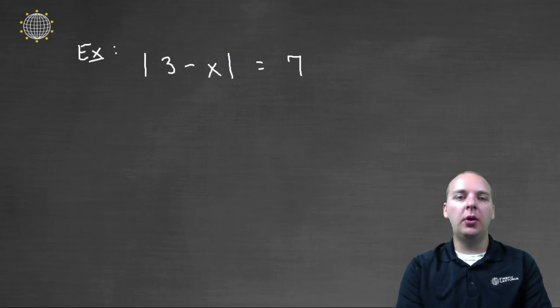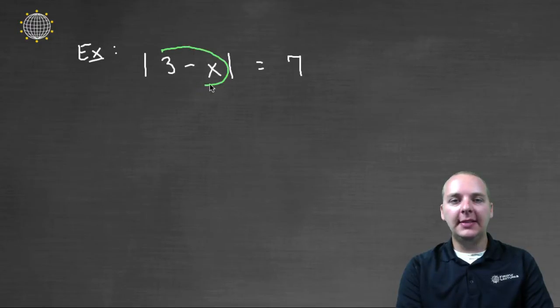Let's try a more involved example here. Let's say we were trying to solve for x where the equation was absolute value of three minus x equals seven. Well, I don't know what x needs to be, but what I do know is that three minus x, that quantity total, had really better be either negative seven or seven.